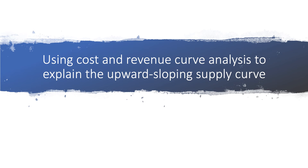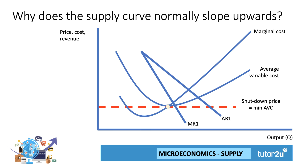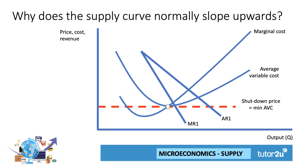As an extension for Year 13 students, I'm going to use cost and revenue curve analysis to explain the upward sloping supply curve again. So why does the supply curve normally slope upwards? Well, the supply curve is the marginal cost curve above the shutdown point. The shutdown price is the minimum of the average variable cost curve. Thereafter, we use the marginal cost curve to determine the level of output for a profit-maximising firm.